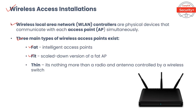A fit AP is a scaled-down version of a fat AP and uses an access controller for control and management functions. The third type is a thin access point — nothing more than a radio and antenna controlled by a wireless switch. Thin access points, sometimes called intelligent antennas, do not perform wireless LAN encryption; they merely transmit or receive encrypted wireless frames. A thin AP has minimal functionality and requires a controller; they are simple and do not require complex hardware or software.